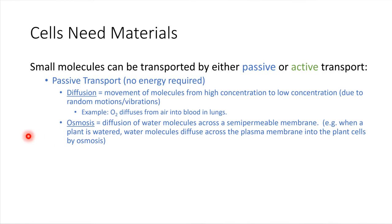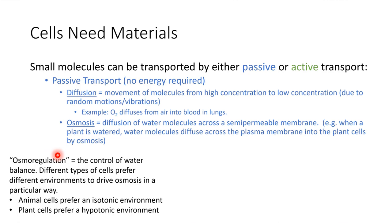For living things, being able to control the water balance is something that's really critical. This is called osmoregulation — regulating or controlling which direction water is flowing. Different types of cells have different preferences when it comes to osmoregulation.